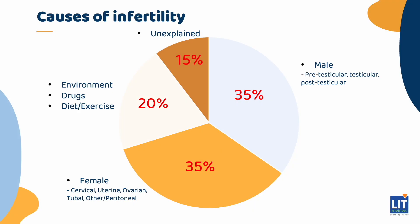This slide describes the different causes of infertility. Of all infertility workups, about 35% of cases are attributable to male problems — including pre-testicular, testicular, and post-testicular. About 35% of cases stem from problems with the female partner. Female causes of infertility are categorized by anatomy as you move up the genital tract.